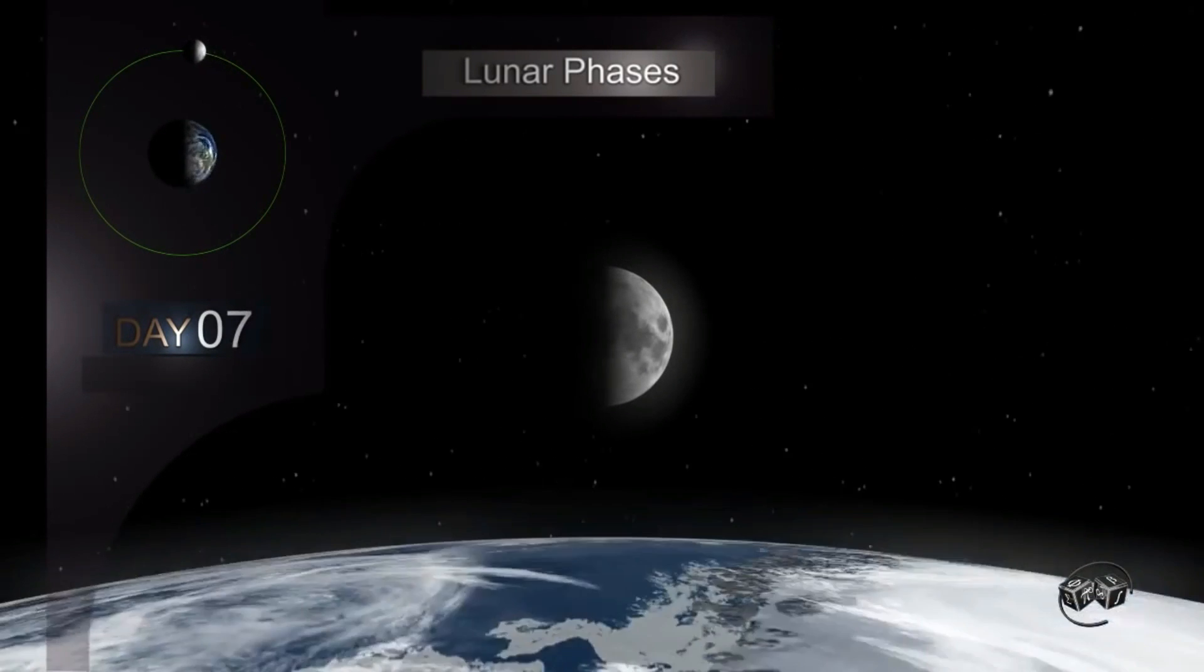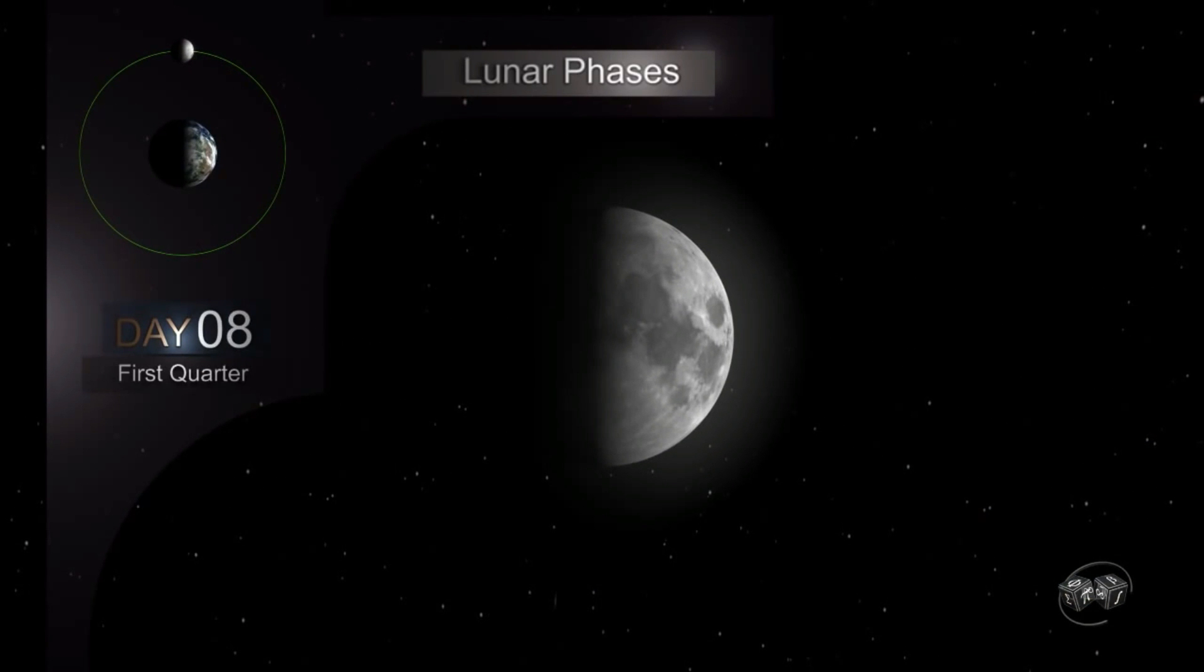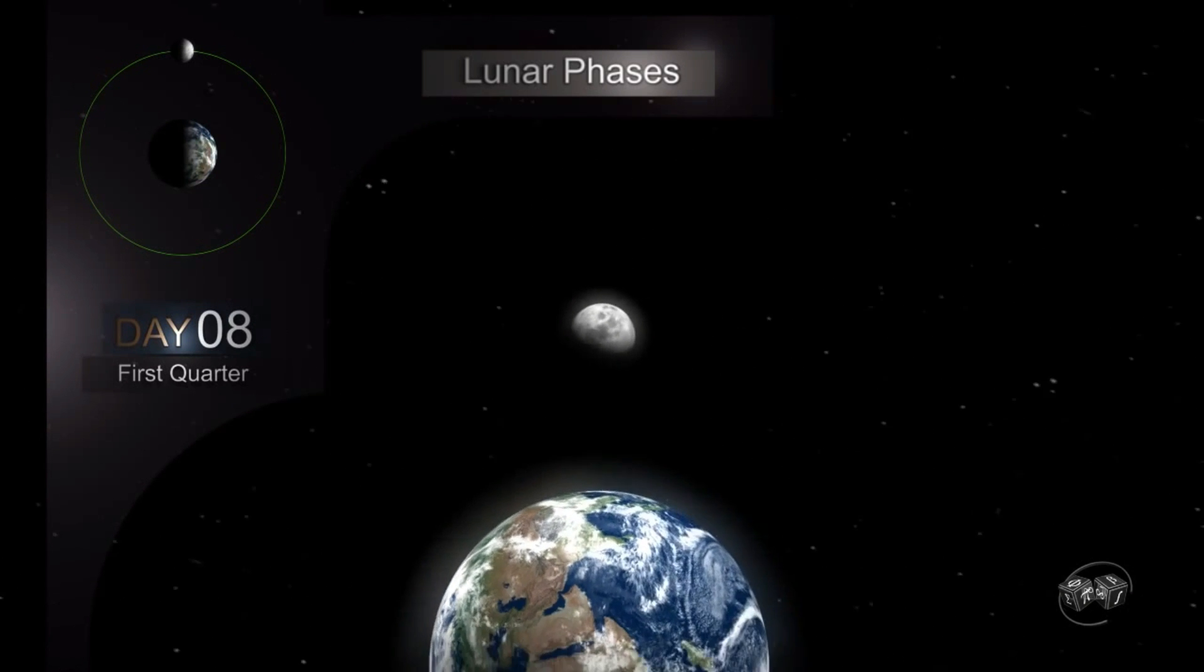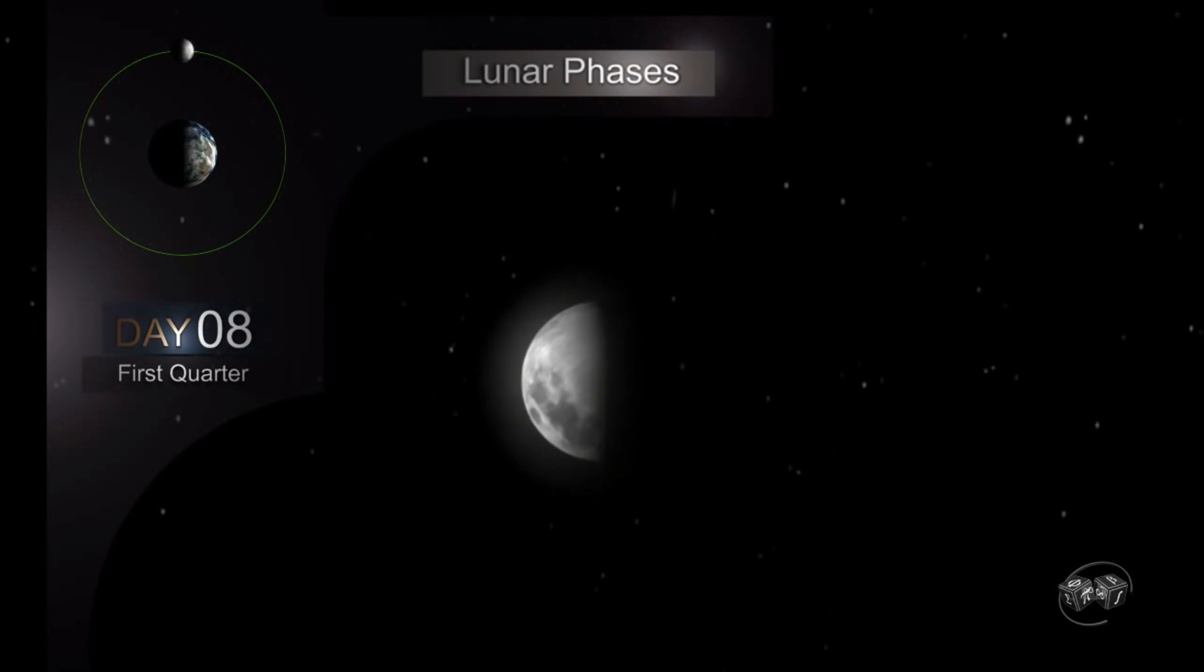If we observe the crescent from the North Pole, the Moon takes the form of D. However, if we go to the South Pole, the Moon takes the form of C.